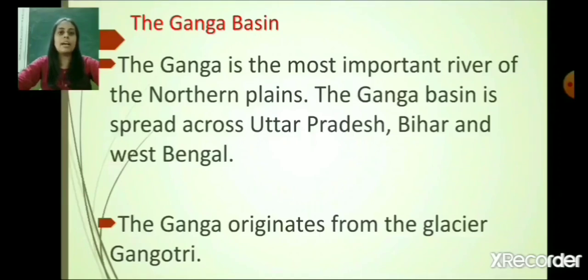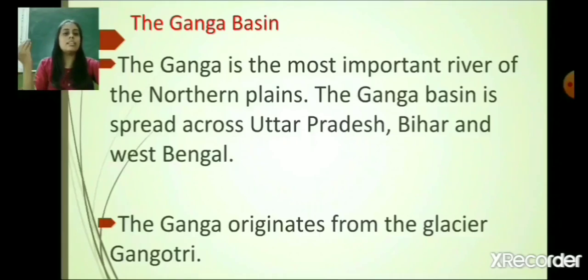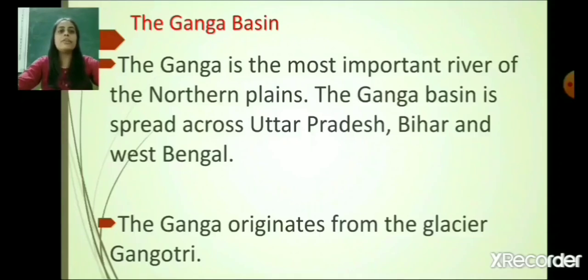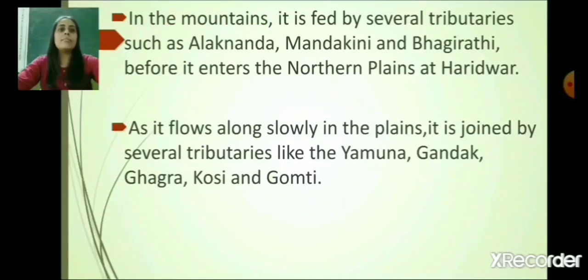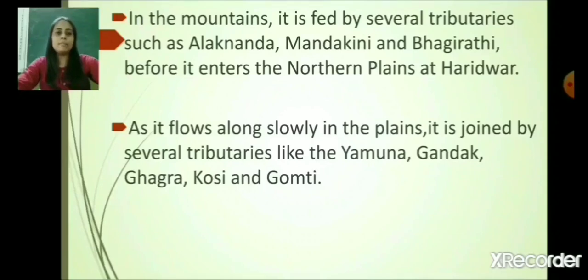The Ganga Basin is spread across Uttar Pradesh, Bihar, and West Bengal. The Ganga originates from the Gangotri Glacier — a glacier is a big sheet of ice found in the mountains. It is fed by several tributaries such as Alaknanda, Mandakini and Bhagirathi before it enters the northern plains at Haridwar, and then flows slowly through the northern plains.